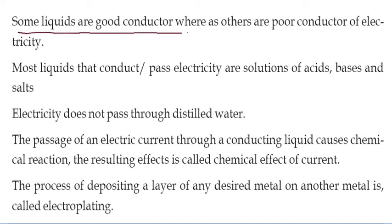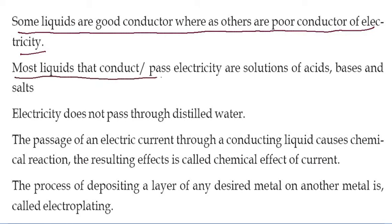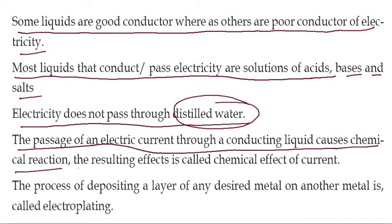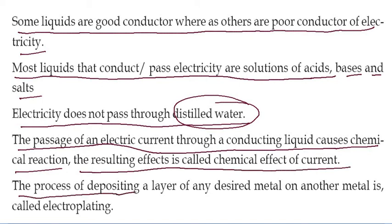Some liquids are good conductors whereas others are poor conductors of electricity. Most liquids that conduct electricity are solutions of acids, bases, and salts. Electricity does not pass through distilled water. The passage of electric current through a conducting liquid causes chemical reactions — the resulting effect is called the chemical effect of current. The process of depositing a layer of any desired metal on another metal is called electroplating.